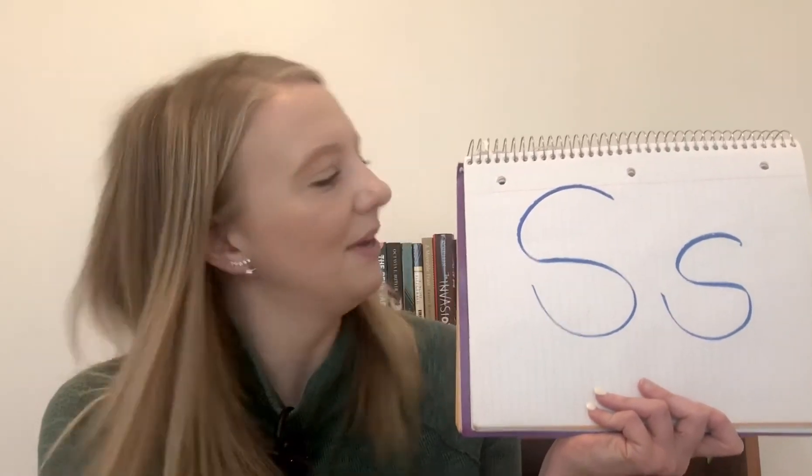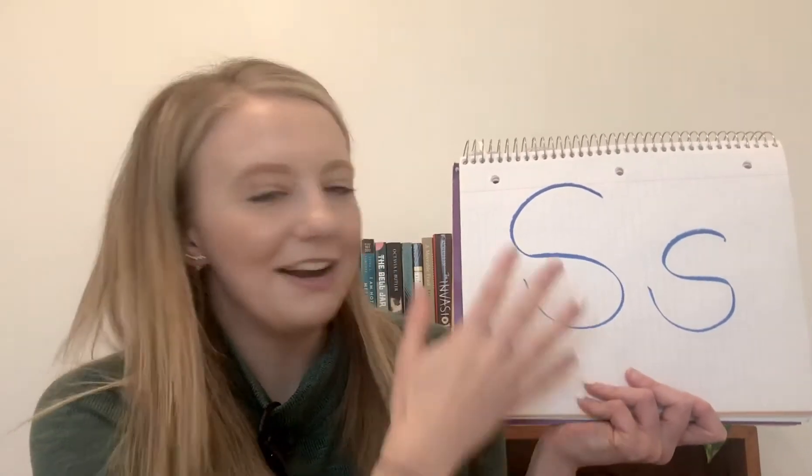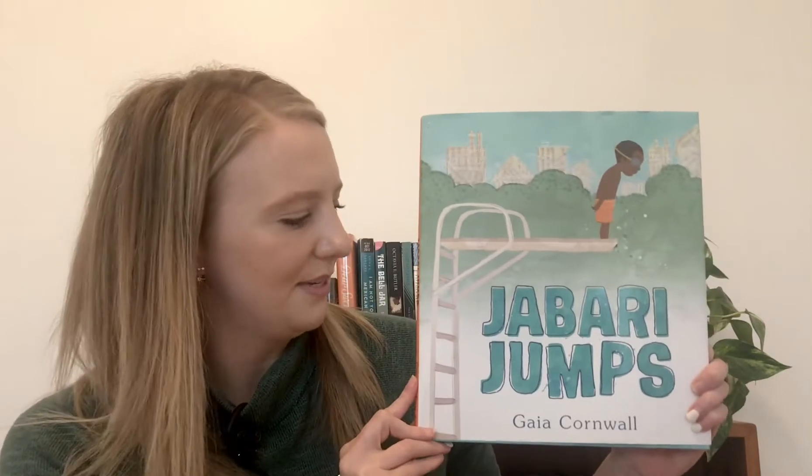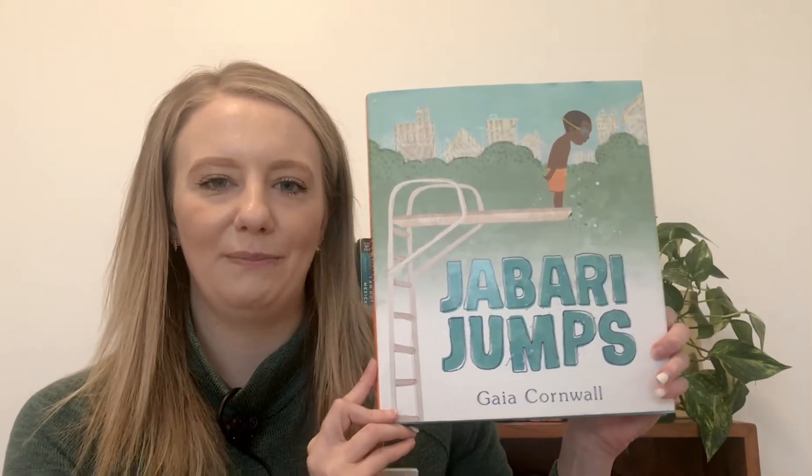Researchers have found that children identify letters by the shapes that make them up. So by writing them down like this and identifying the shapes in them, that can help us find the letters on the page in our activity. Now that we know what we're looking for, let's read a page from our book. Today I will be reading a page from Jabari Jumps by Gaia Cornwall.